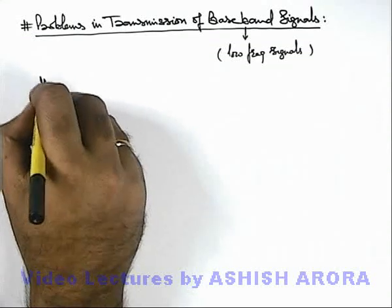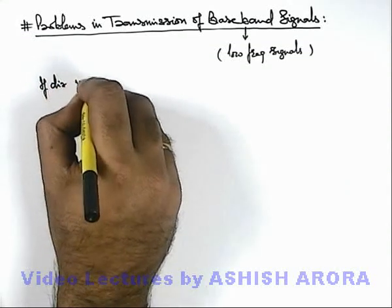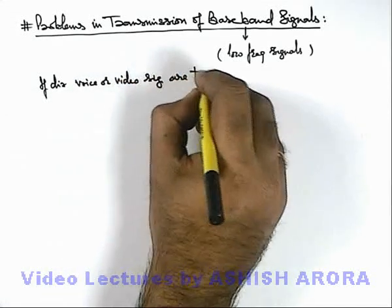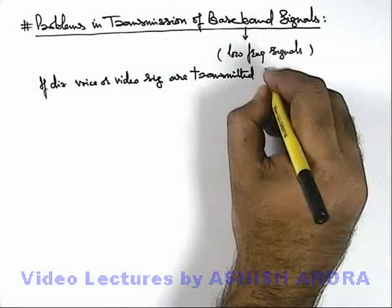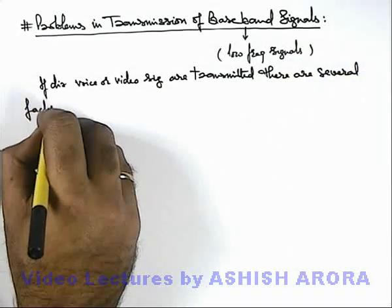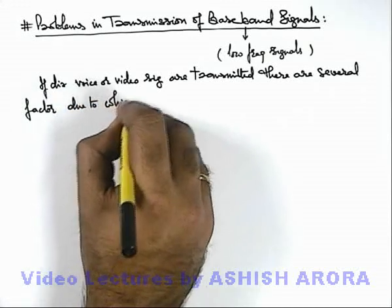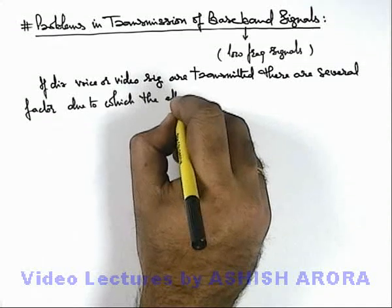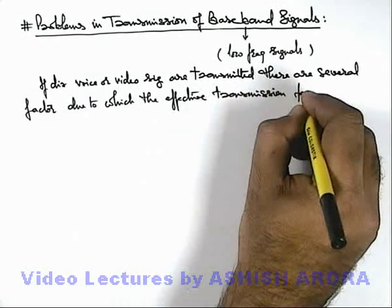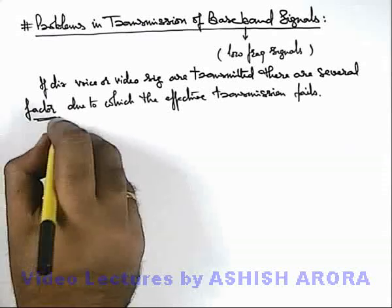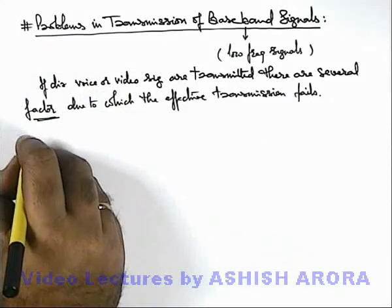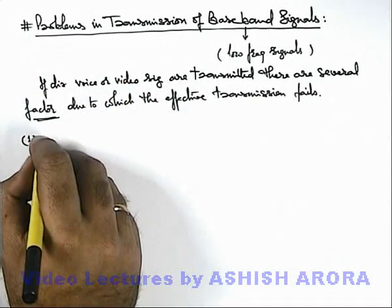If voice or video signals are directly transmitted, there are several factors due to which effective transmission fails. These are the factors we need to understand — the problems because of which baseband signals cannot be directly transmitted. The very first is the size of the antenna.